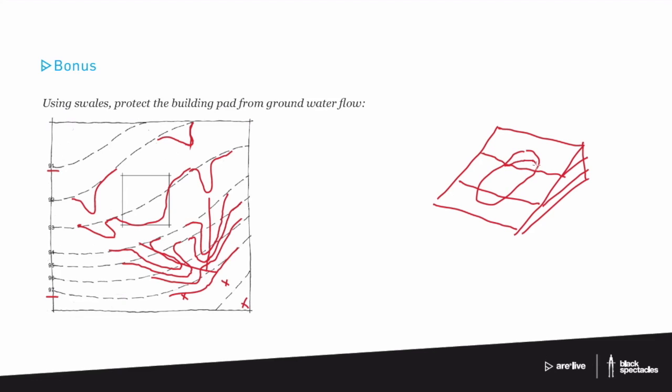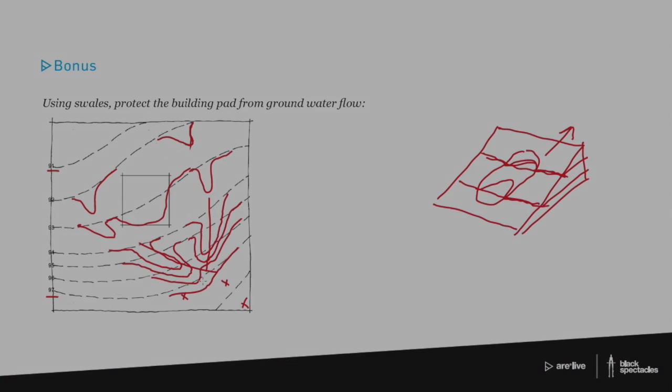Well, that contour line would now look sort of like that, right? So you can see that the contour line, for lack of a better term, points uphill. See how these pointed uphill? So there you go.